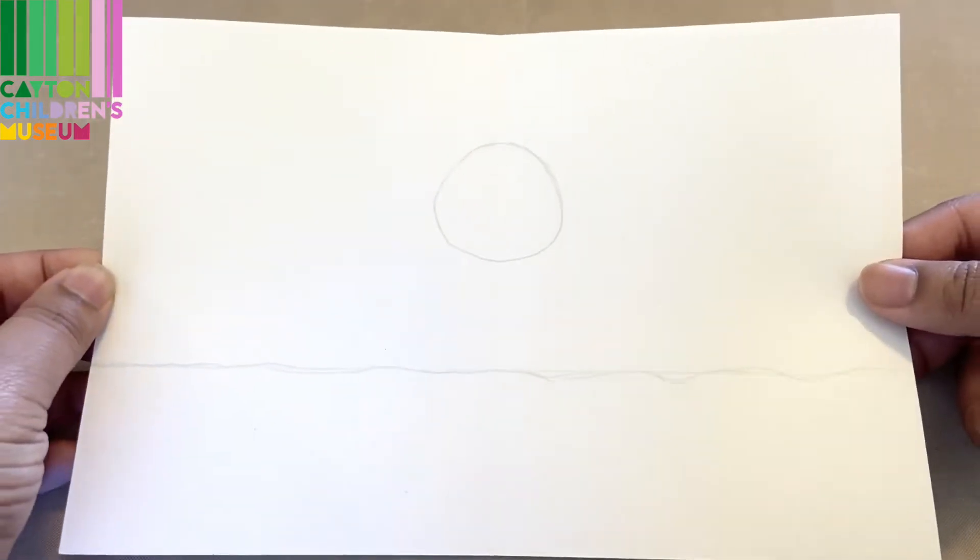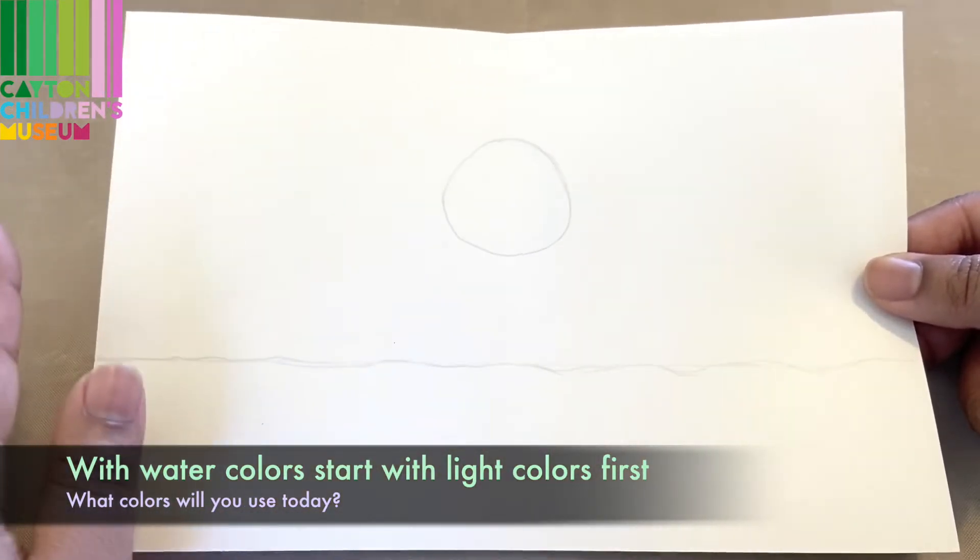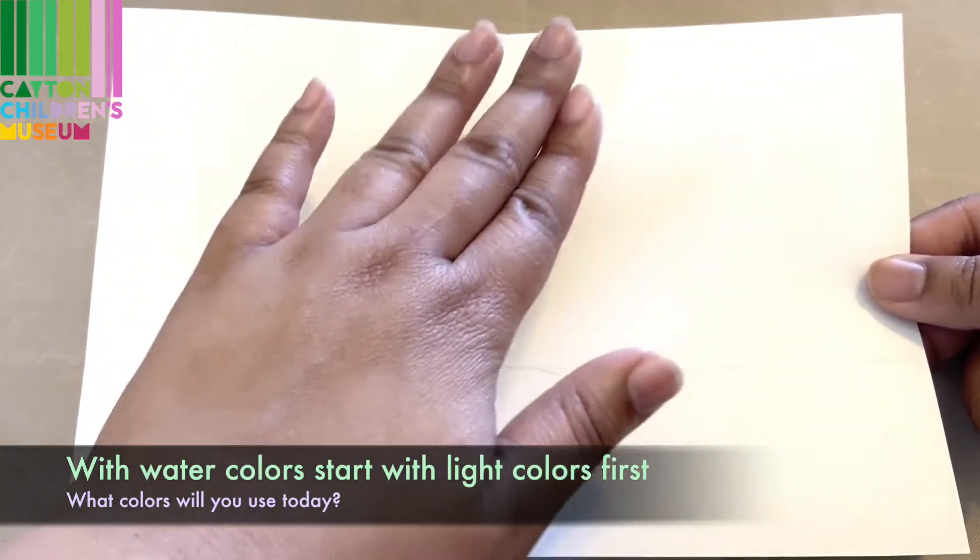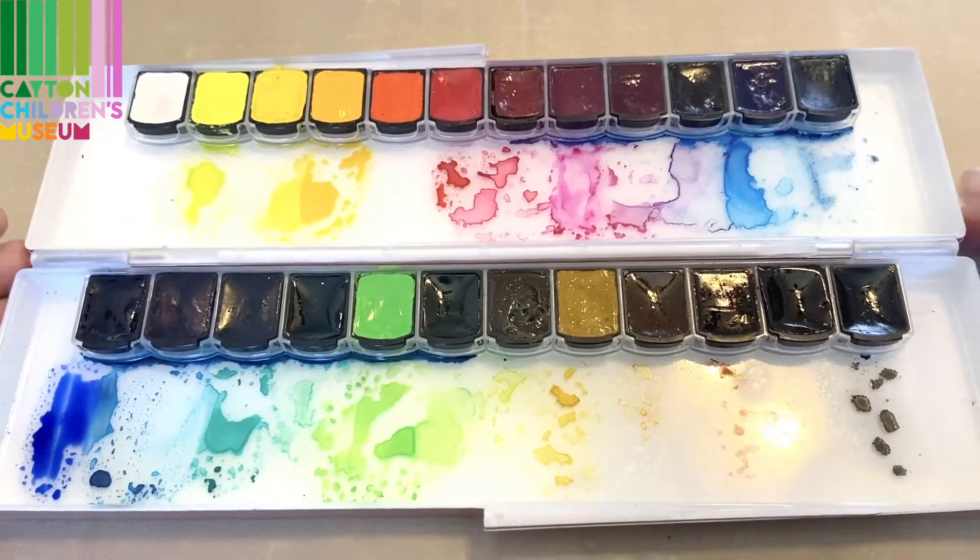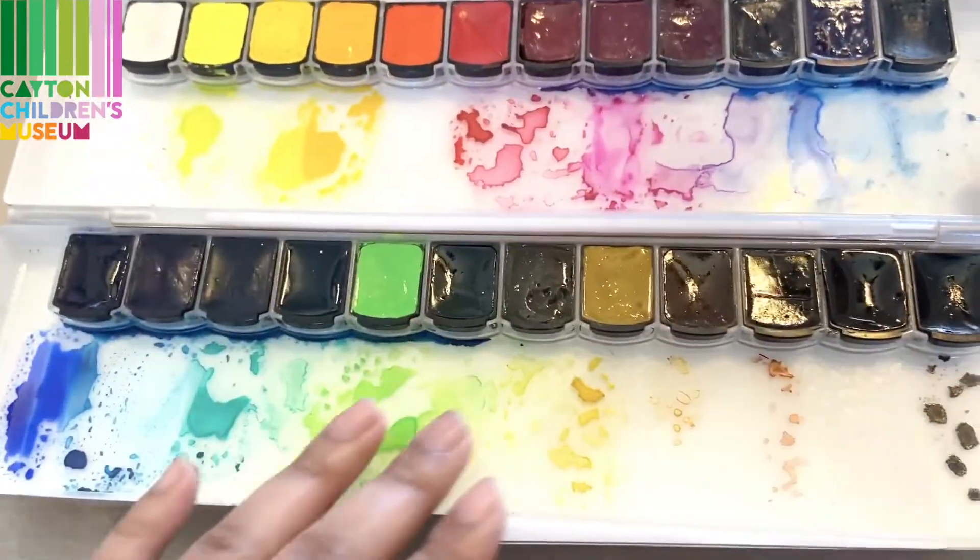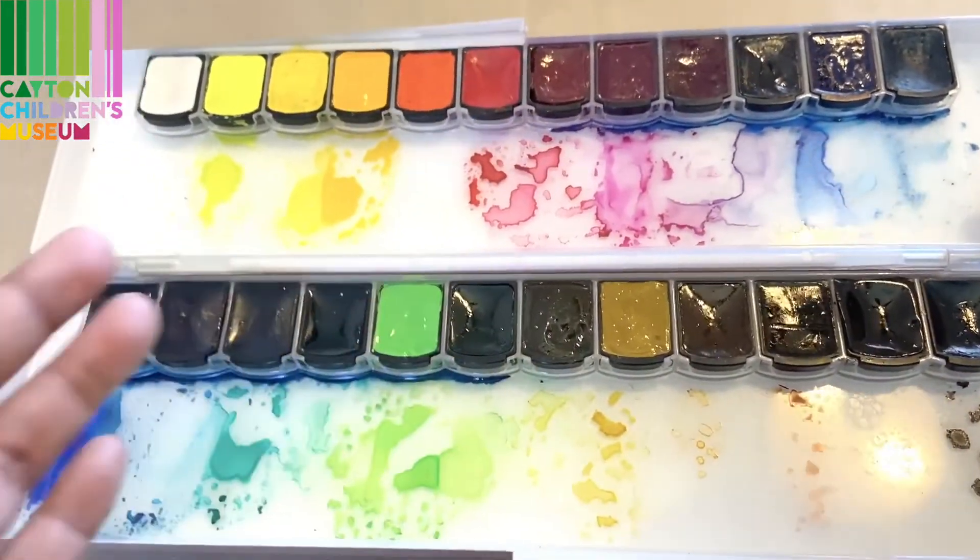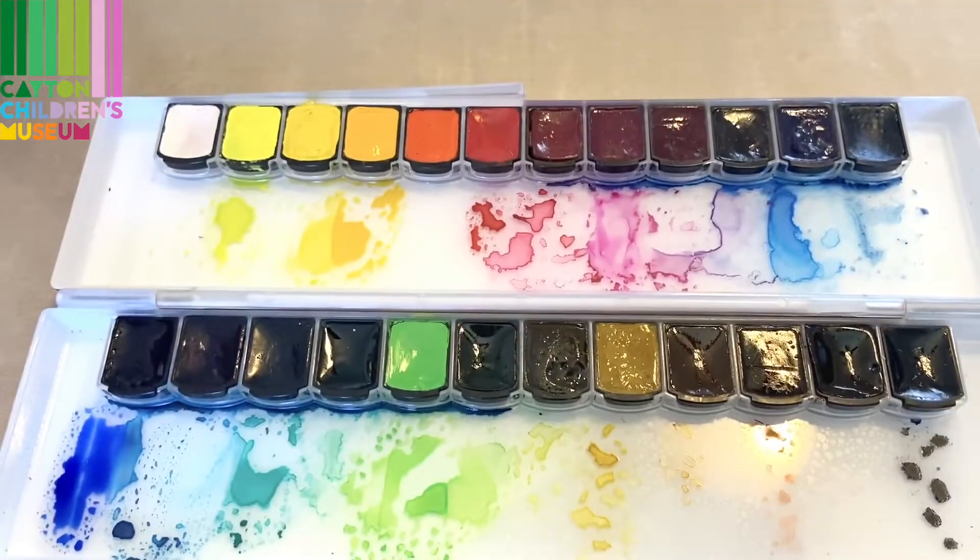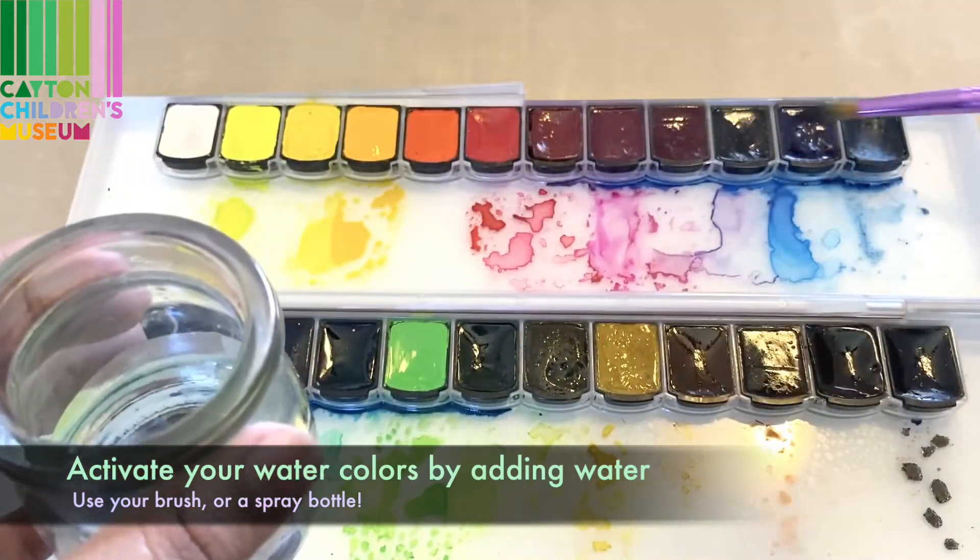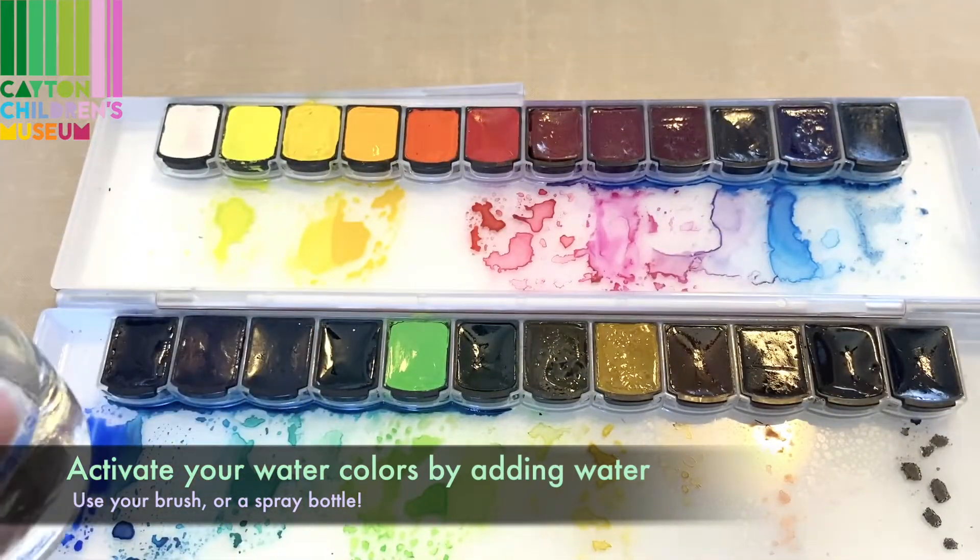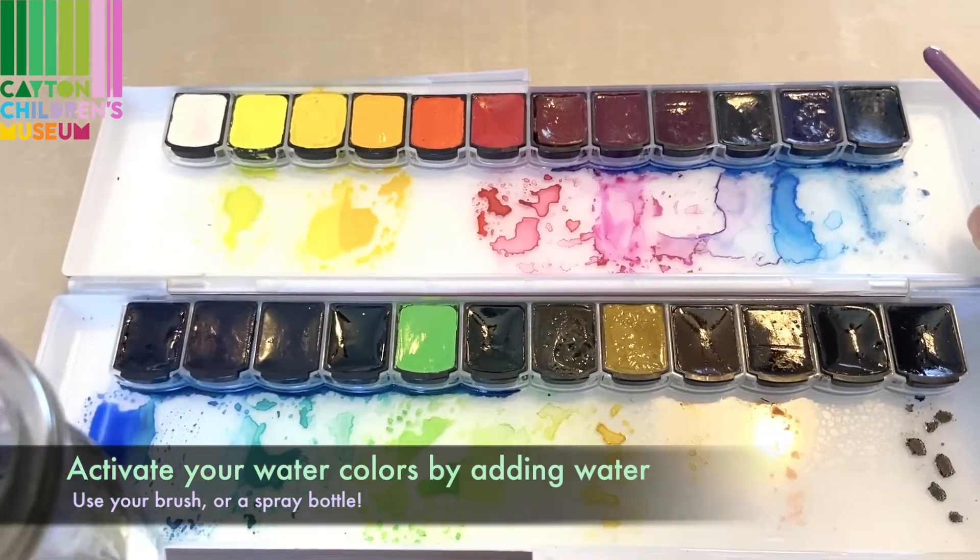Now that I've got my sketch down, I'm going to get ready to start laying down the colors. And with watercolors, you'll want to go from your lightest color to your darkest color. Before I start painting, this is what my watercolor palette looks like. The paints are pretty dry, so before you can even pick up paint, you'll want to take your water and your brush and put some water on top. If you have a spray bottle, you could just spray water on top to reactivate the watercolors.